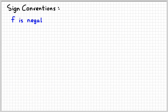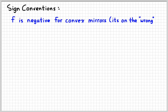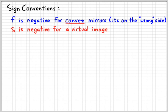A couple of sign conventions: most of the time these numbers are positive, but here are the exceptions. The focal length F is negative for a convex mirror, because the focus is on the wrong side of the mirror. S-I is negative if you have a virtual image — again, it's kind of on the wrong side of the mirror. In those two situations, remember to make the number negative when using it in the equation.